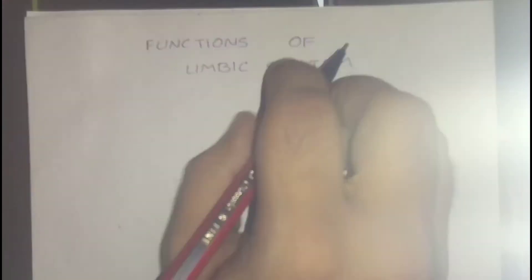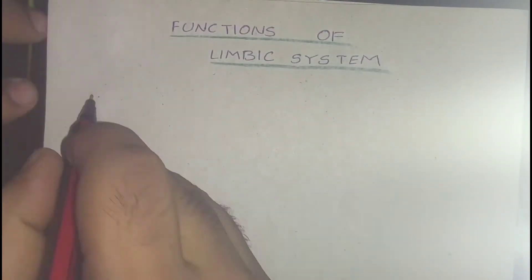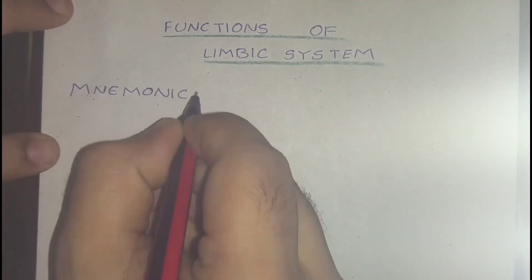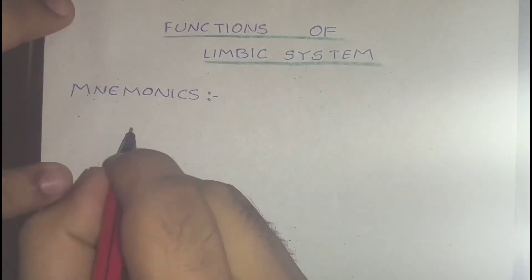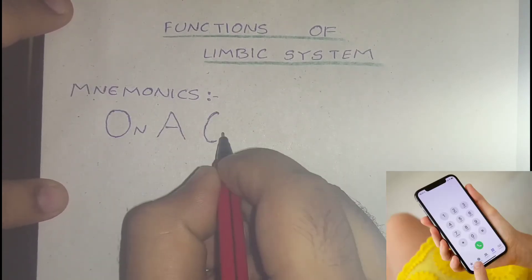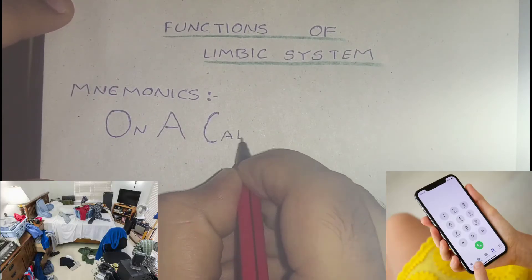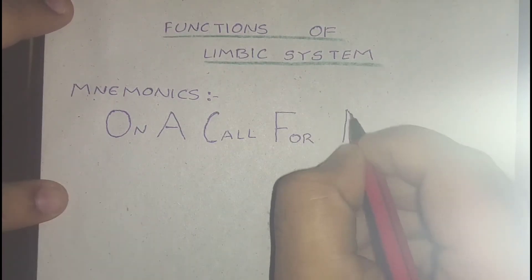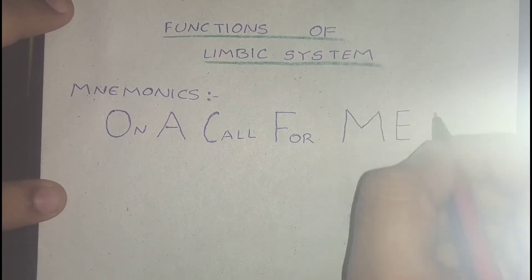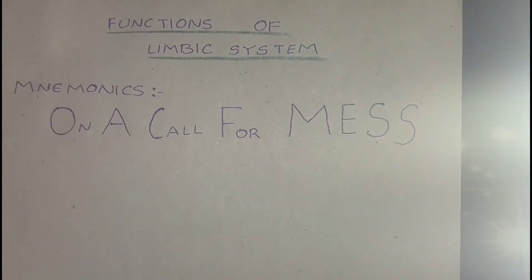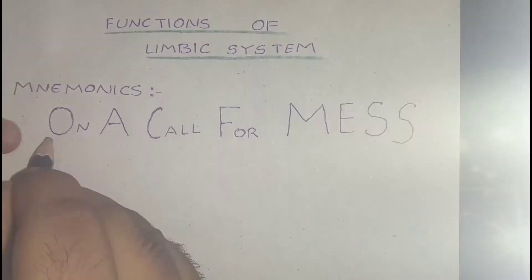The functions of the limbic system — the mnemonic I have for you is 'On A Call For Mess.' The capital letters in these words are what you need to memorize.